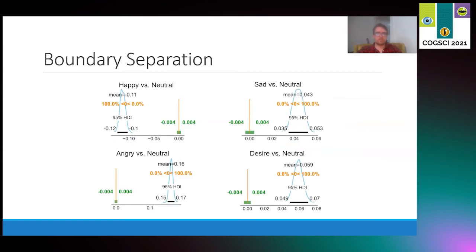Turning to the results, we first look at the boundary separation or the amount of evidence needed to make a decision. We found pretty strong effects across all contrasts. We found that the happy condition required less evidence than the neutral condition and that the sad, angry, and desire conditions all required more evidence than the neutral condition. As such, it appears that people in the happy condition were more focused on speed over accuracy and people in the sad, angry, and desire conditions were more focused on accuracy over speed.